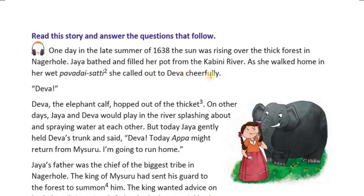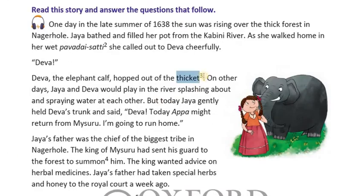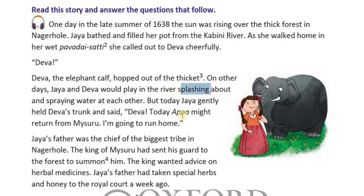She called out cheerfully to Deva — Deva, the elephant calf. He is the character of this story. 'Khoat' means to jump out of the thicket. A thicket means a dense group of trees or bushes. On their days, Jaya and Deva would play in the river, splashing about — splashing means sprinkling and spraying water at each other. Both would play in the nearby forest and river.